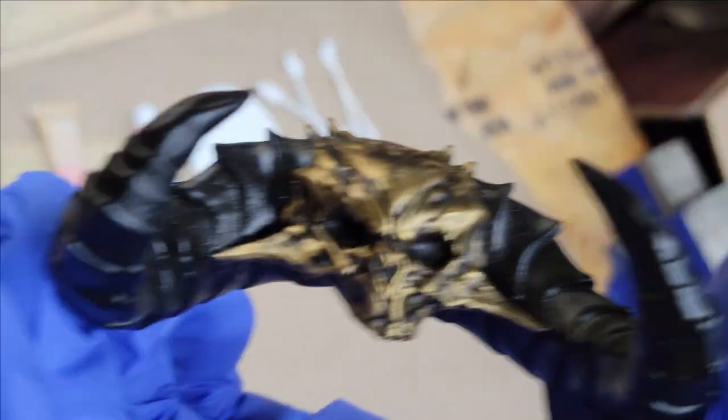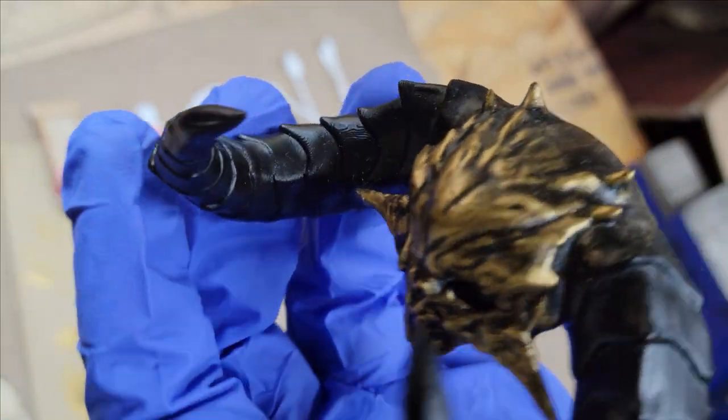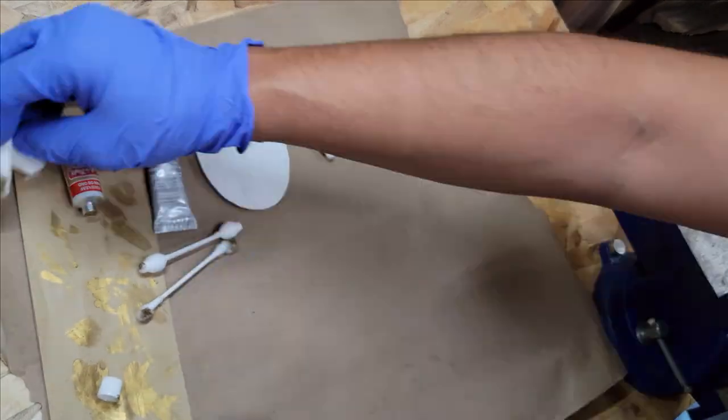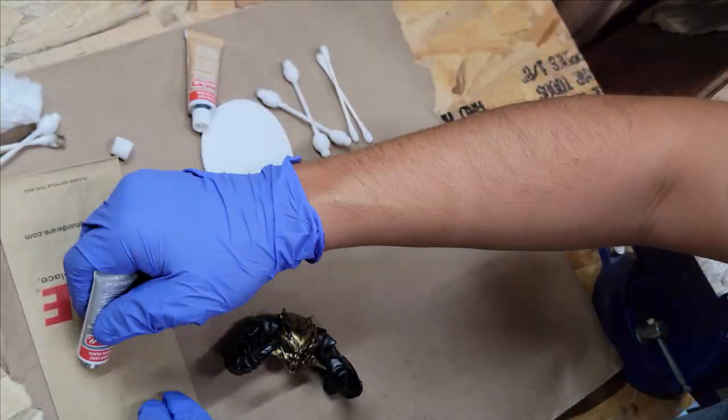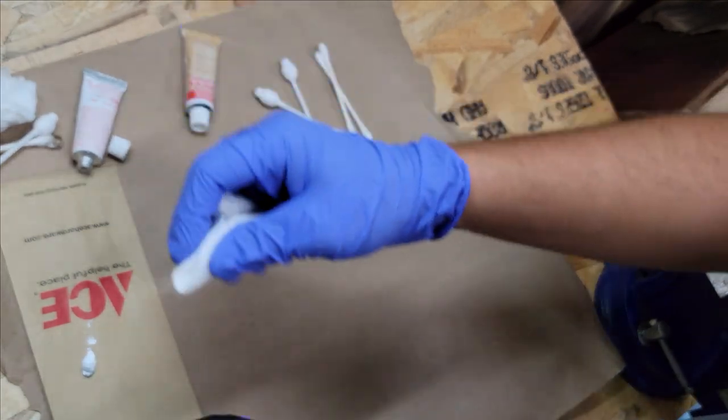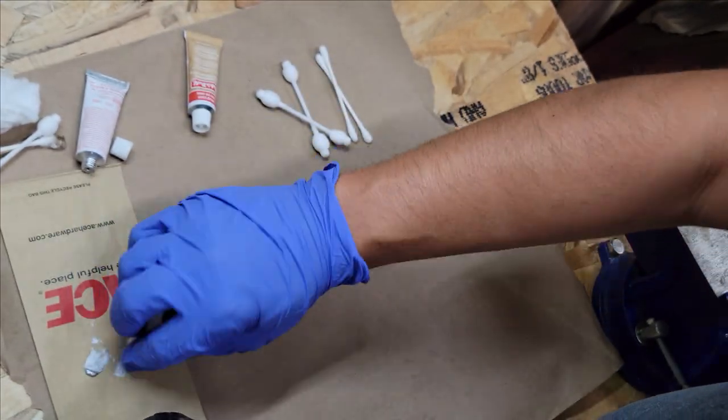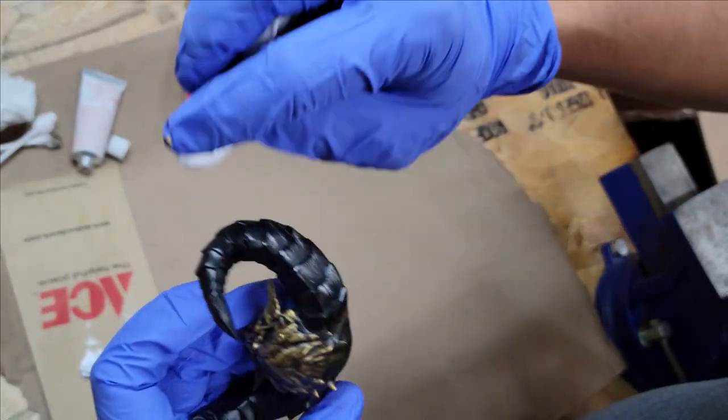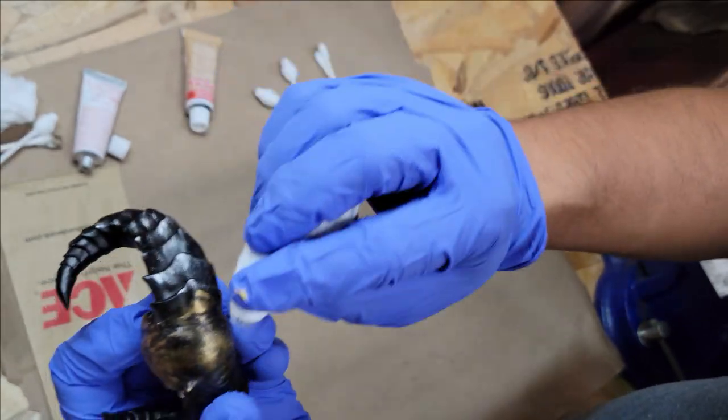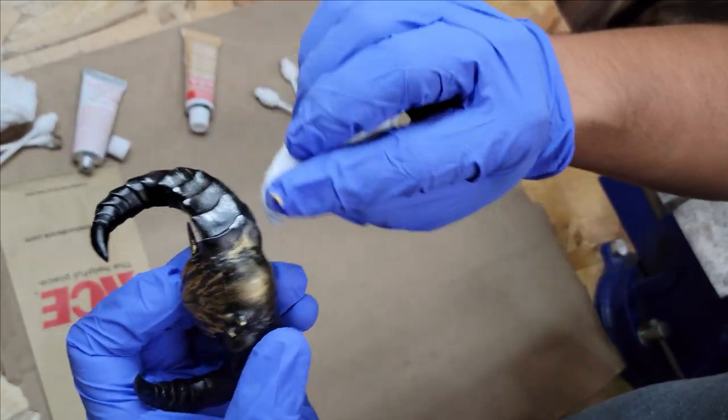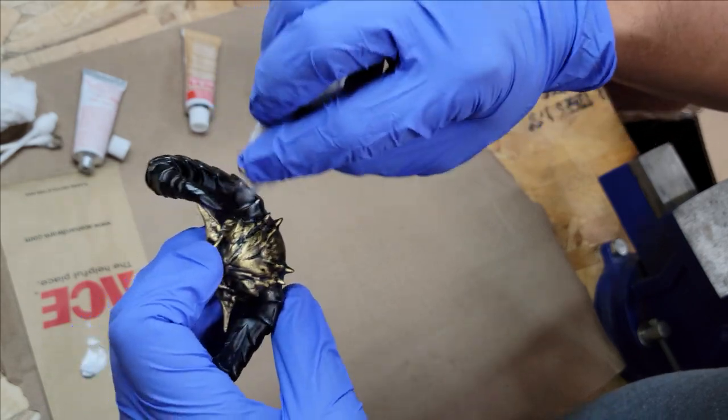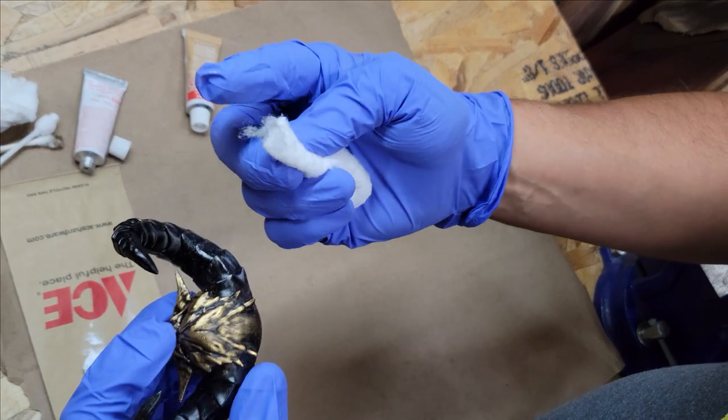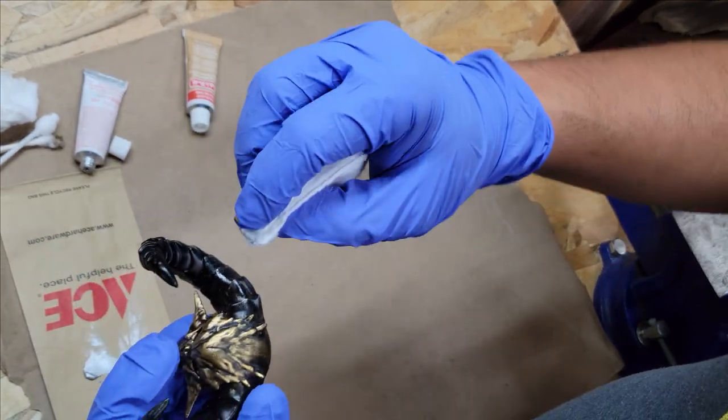I think I'm done with the gold. Now I'm going to go ahead and hit it with the silver. I'm just going to do the same thing and brush over with the silver, and I'll highlight the ridges and stuff.